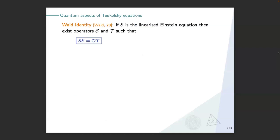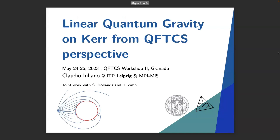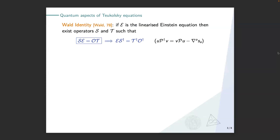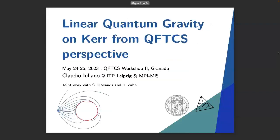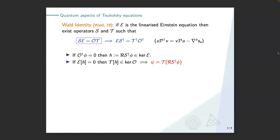We want to solve this situation. The idea is to use something called the Teukolsky identity. If you take the linearized Einstein equation, you can find two differential operators S and P such that this identity holds between operators. Once you have these identities, you can introduce a dagger operation and take the dagger of this identity to get a new identity. Here is where the magic happens: if you have something that solves the dagger of the Teukolsky equation, then you automatically have something that is in the kernel of your linearized Einstein equation — so it is a solution of the linearized Einstein equation.